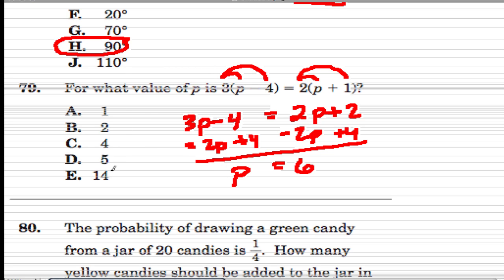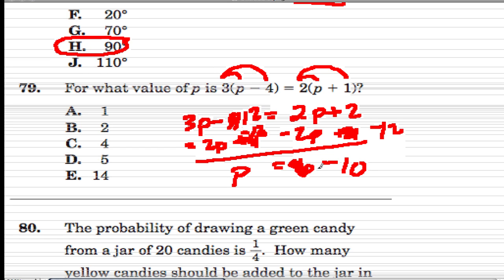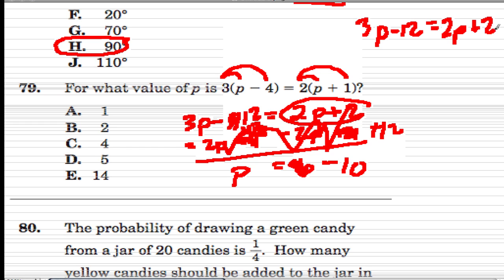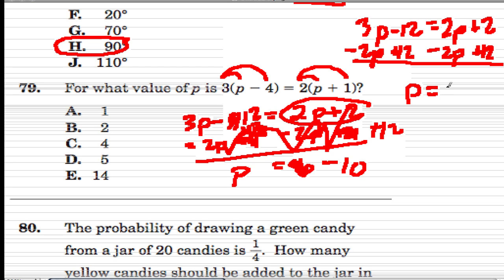I don't see that answer, so I'm doing something wrong. I see a mistake — 3 times 4 is not 4, it's 12. Let me start over. We have 3p minus 12 equals 2p plus 2. I'll take 2p away from both sides, keep it balanced, and add 12 to both sides — remember the inverse operations. And we get p equals 14. There's our answer.